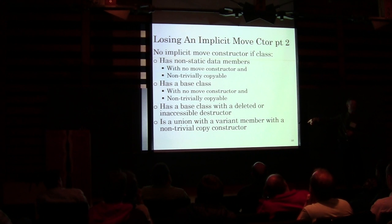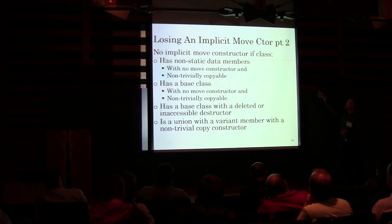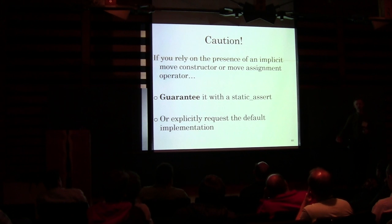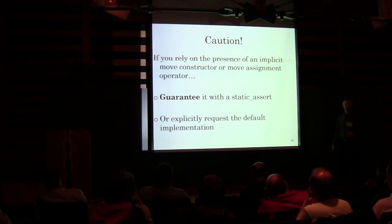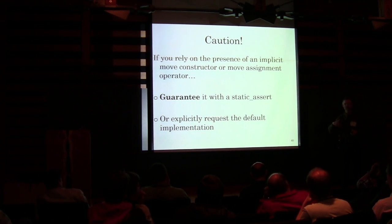Here are more rules — things that can make your implicit move constructor or move assignment disappear. There are corresponding rules that will make the move assignment disappear. So if you're going to rely on an implicit function, you can either guarantee it's present with a static assert immediately after the declaration of the class — so while you're modifying your class, you can see whether that implicit thing disappeared.